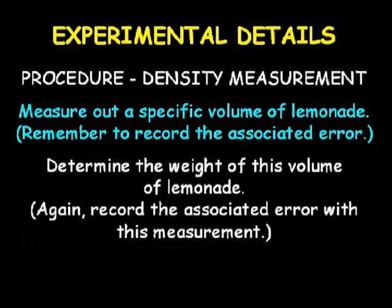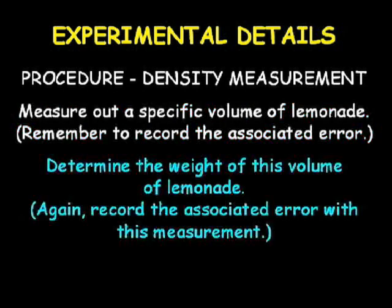To find the density of the lemonade, you will first need to measure out a specific volume of lemonade, and the error in this volume will need to be estimated. This measured volume will then be weighed and the error associated with the balance also recorded. The density of the lemonade with its associated error can then easily be determined, since it will be equal to the mass of the lemonade sample divided by the volume of that sample.